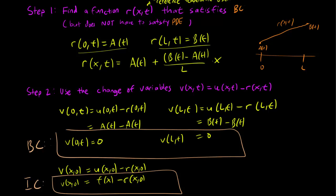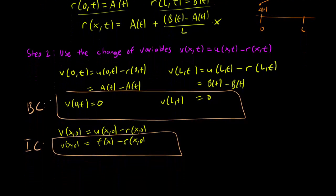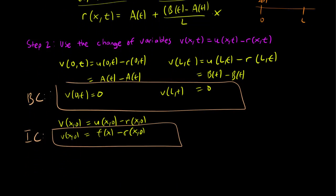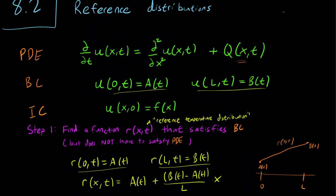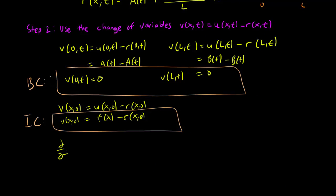However, the downside of using this technique of reference distributions is that it makes our PDE itself a lot worse. So let's see what happens when we substitute our PDE. We get ∂/∂t. So instead of u, I guess we should mention this.